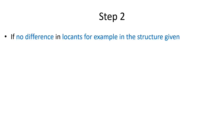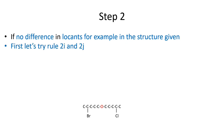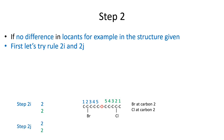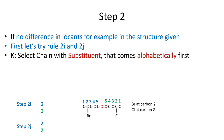If there is no difference in locants, try criteria 2i and 2j. Number both chains and compare locants — bromine comes at position 2 and chlorine also at position 2, so there is no difference. Using criteria 2j, same situation — no difference. Now use the next criteria: select the chain that has substituents that come alphabetically earlier. As bromine is alphabetically earlier than chlorine, our parent hydride is the chain with bromine attached to it.